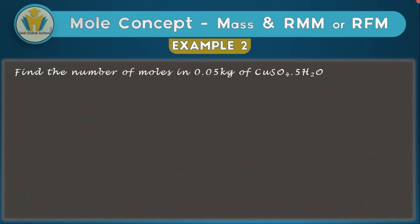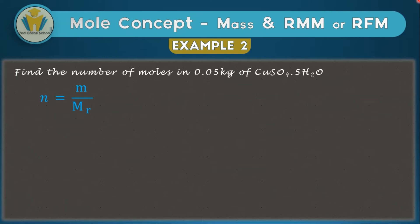In example two, we're asked to find the number of moles in 0.05 kg of hydrated copper sulfate. Following our steps: first, we identify the formula — we have mass, so we use n = m/Mr. Next, we identify the data — we need mass and molar mass. We have the mass. Since we have a molecule, we use the relative molecular mass. For a compound, we add up the atomic masses of all the elements in it to get the molecular mass.